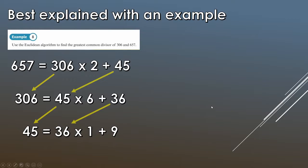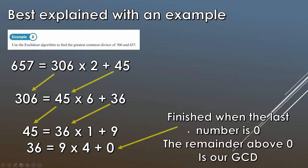That's going to give me 36 is equal to 9 times 4, we add the remainder of 0 here. So obviously we can't really add a remainder of 0, it just leaves us with 36. But because we've got a remainder of 0 now the Euclidean algorithm terminates. So we finish when the last number is 0.